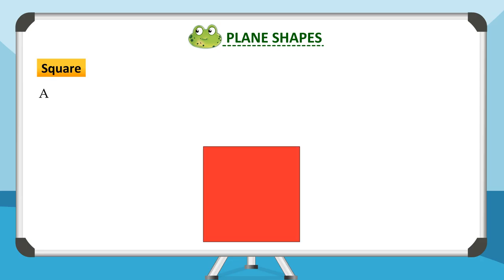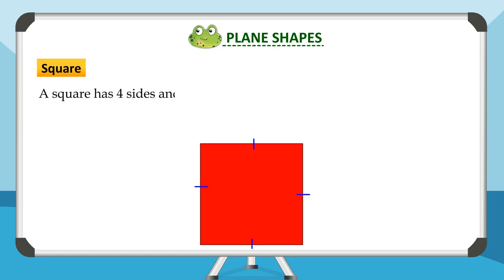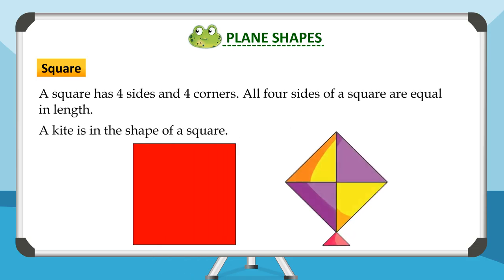A square has four sides and four corners. All four sides of a square are equal in length. A kite is in the shape of a square.